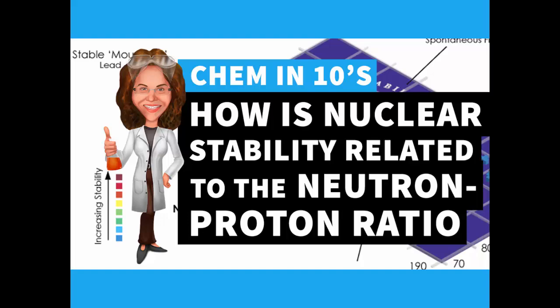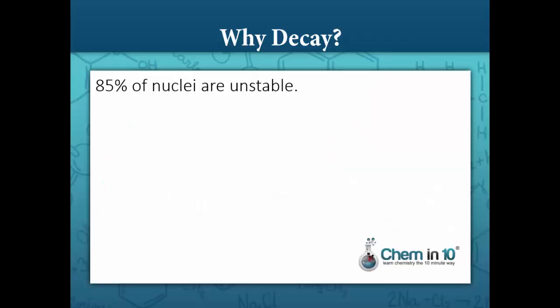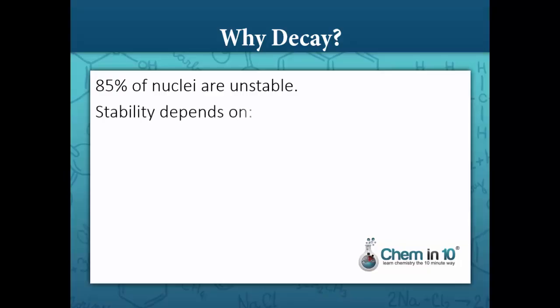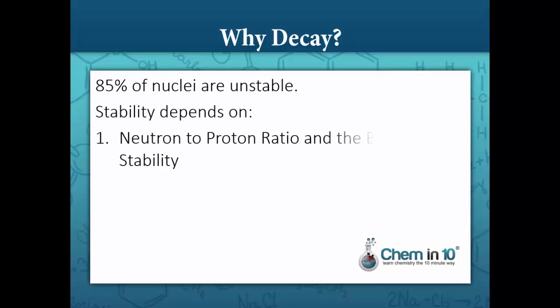In this lesson, we will learn how nuclear stability is related to the band of stability and the neutron-to-proton ratio. 85% of all nuclei are unstable. Stability depends on the neutron-to-proton ratio, the band of stability, and on magic numbers.